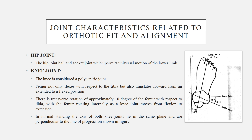The second joint is the knee joint. The knee joint is considered to be a polycentric joint, which means that in addition to providing flexion and extension, the knee joint undergoes gliding and sliding as well as rotation. The femur not only flexes with respect to the tibia but also translates forward from an extended to a flexed position of the knee. Moreover, there is a transverse rotation of approximately 10 degrees of the femur with respect to the tibia, with the femur rotating internally as the knee joint moves from a flexed position to an extended position.